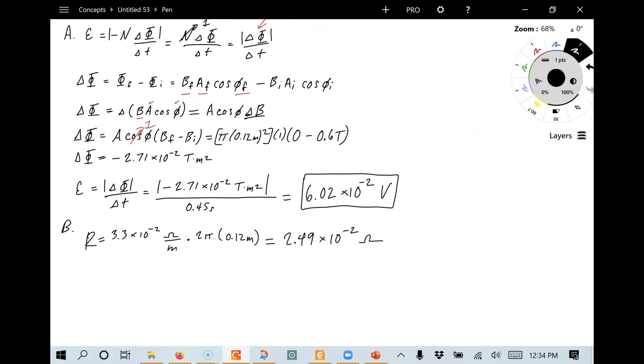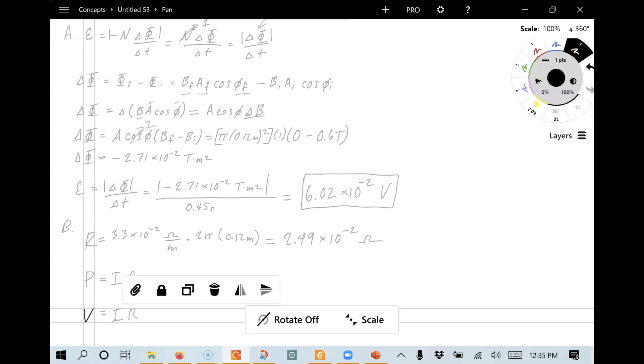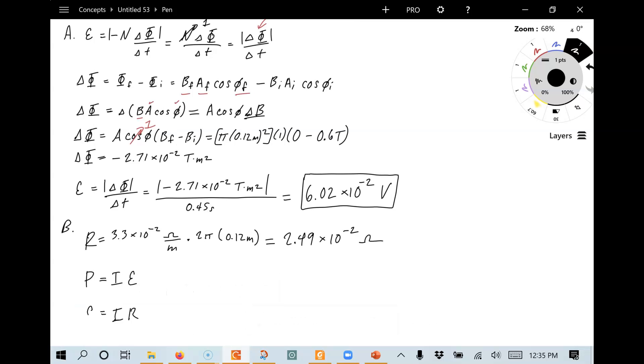Now, to finish off part B, we want to know what the electrical power is. We want to know what P is equal to. In general, we can think of this as IV. In this case, V is the EMF. And Ohm's law also applies. So I can also say, remember, Ohm's law is V equals IR. In this case, V is the EMF. And so I can either calculate the current first using Ohm's law.